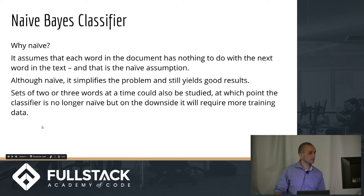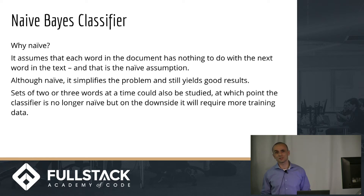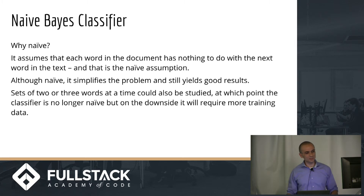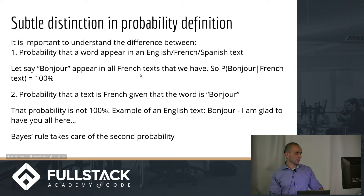It's called 'naive' because it does not consider words in sequence — every word is treated as independent. That's naive, because if three words are English, the fourth is likely English too. The Naive Bayes algorithm doesn't care about surrounding words; it only looks at the current word. This actually yields pretty good results, though using two or three words together requires more training data.